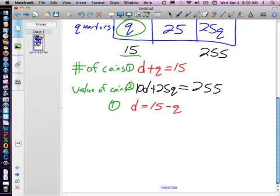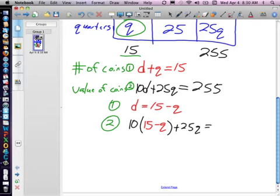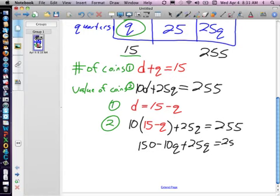So now I'm going to substitute that in to the second equation. So we have 10 times that d that we just figured out. All right. Now we're going to simplify and solve. So 150 minus 10q plus 25q equals 255. Combine these like terms.